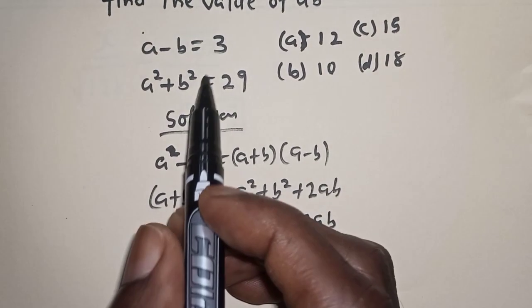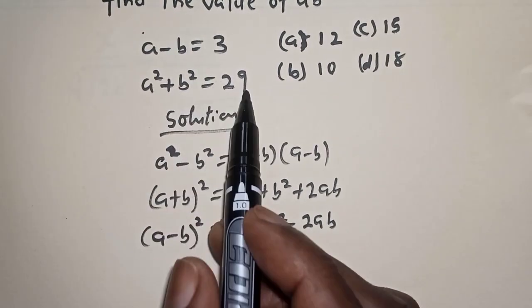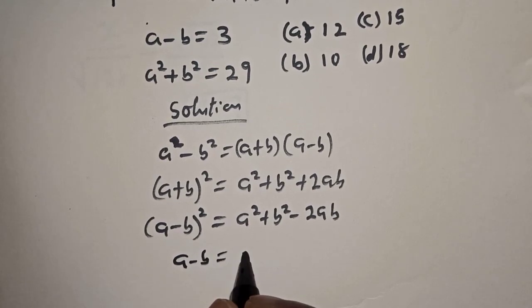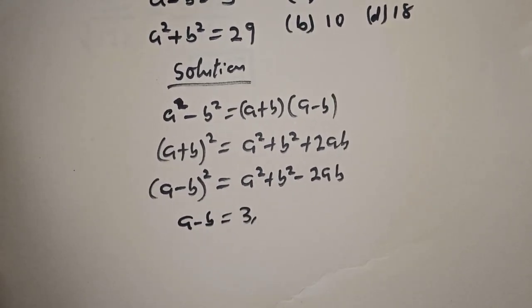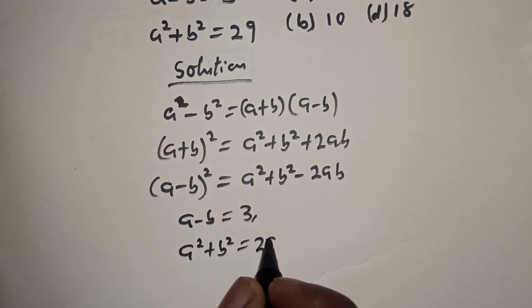Now, A minus B is 3 from the equation given, and A square plus B square is equal to 29.